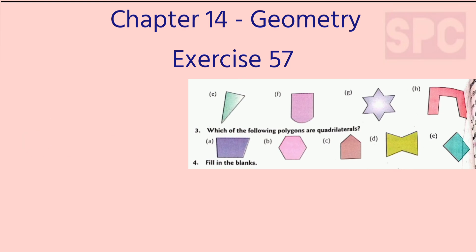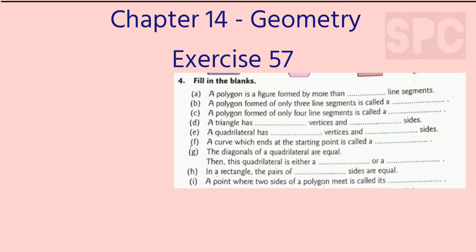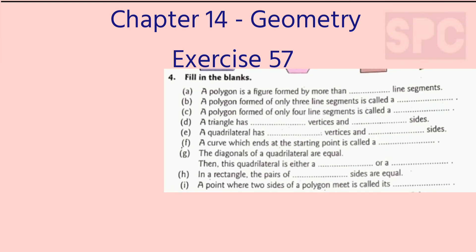Question 3: Which of the following polygons are quadrilaterals? As we know, quadrilaterals are polygons which have four sides. So out of the five options given, figures A and E are quadrilaterals.